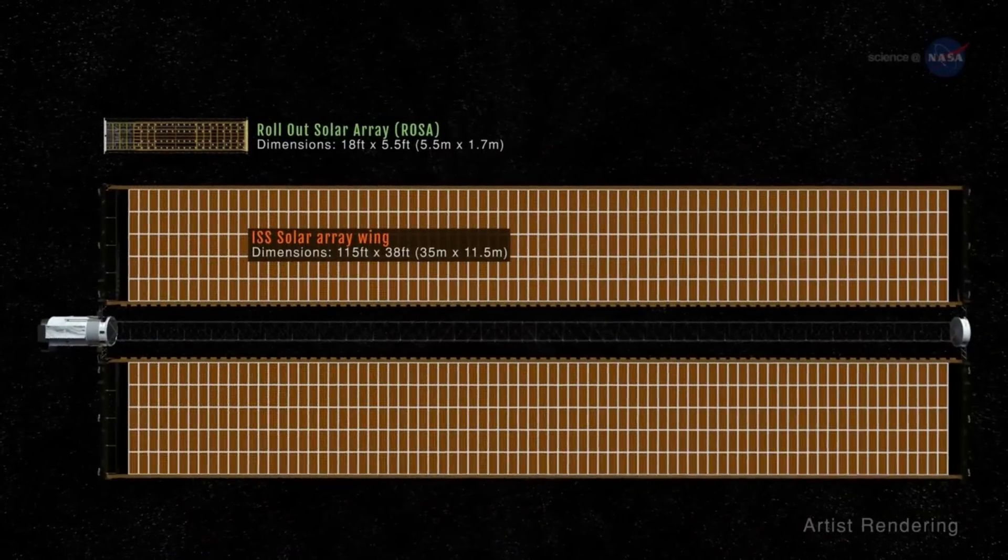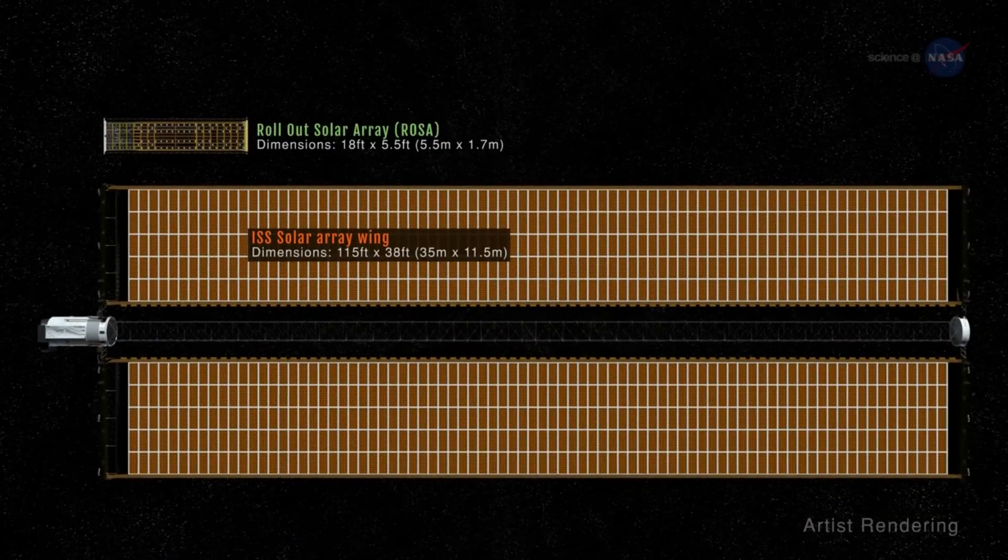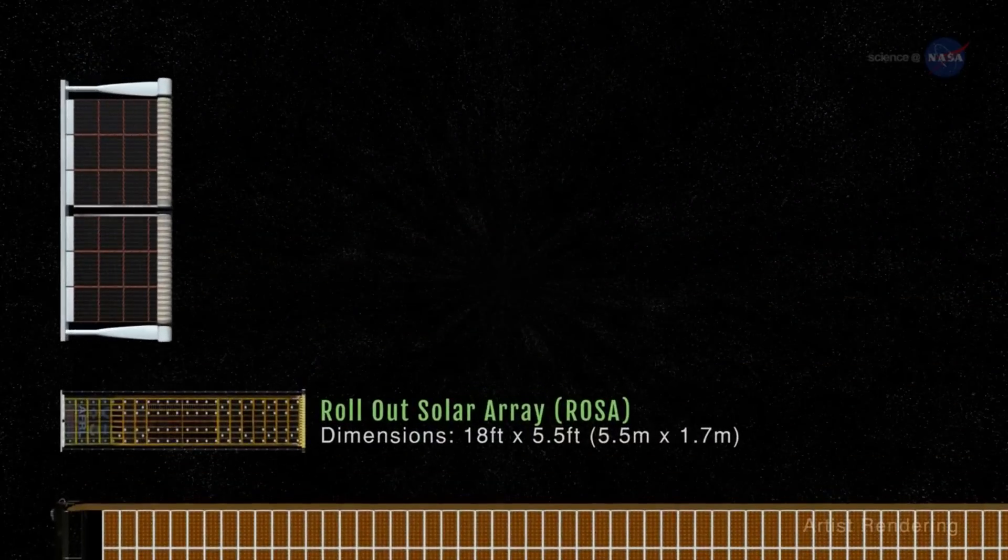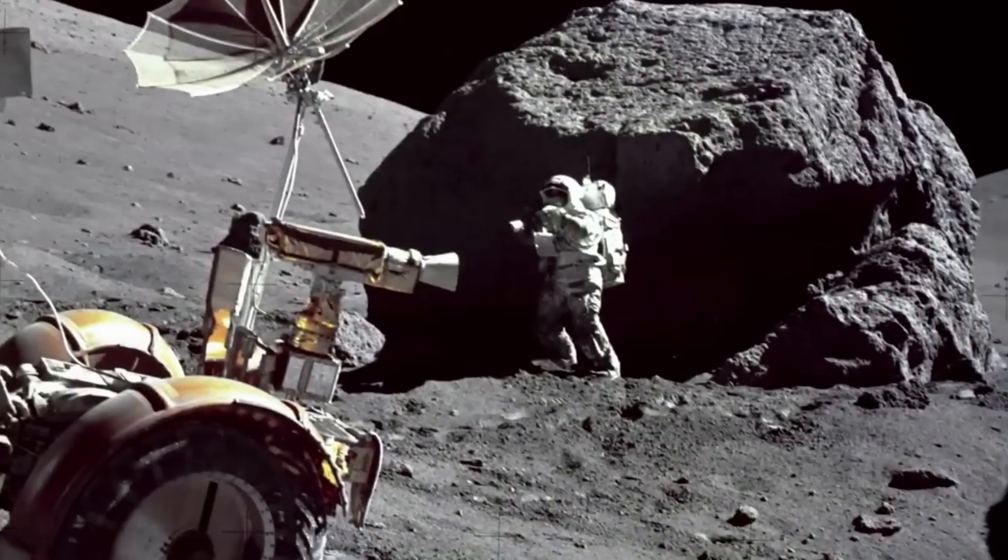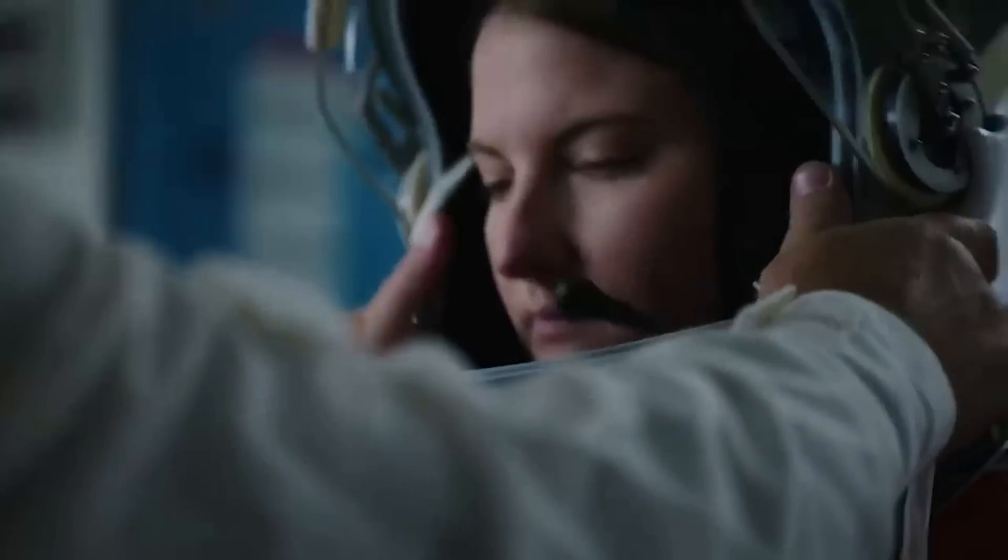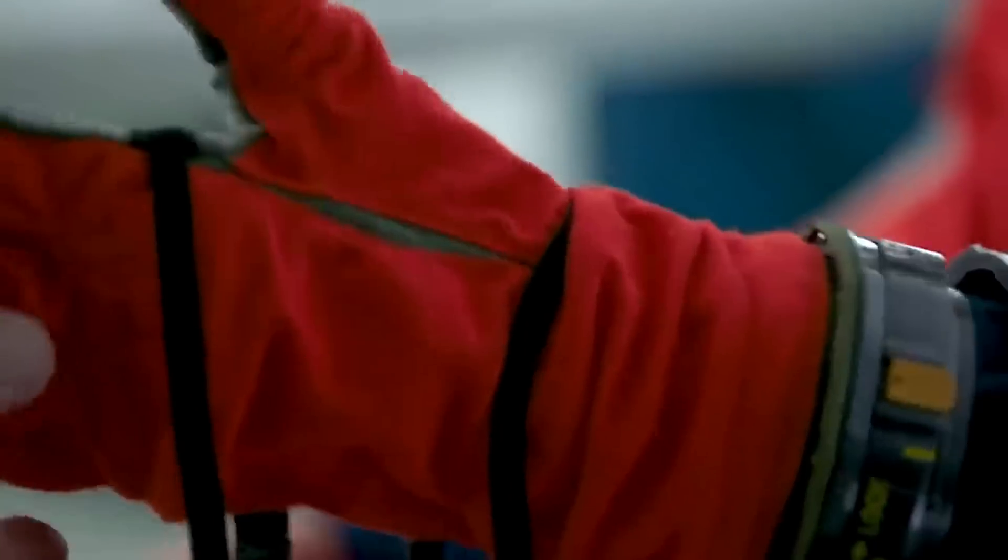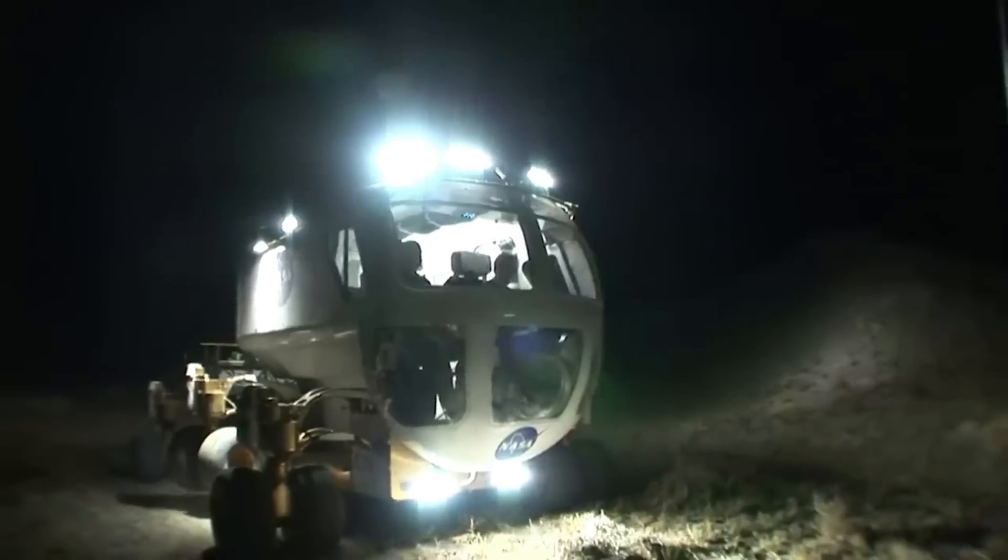While NASA is excited about what Blue Origin is working on, they aren't relying on it. Last year, NASA selected three companies to further advance work on deployable solar array systems that could help power the agency's human and robotic exploration of the moon under Artemis. Through Artemis missions, NASA will return humans to the moon and establish a long-term presence near the lunar south pole. A reliable, sustainable power source is required to support lunar habitats, rovers, and even construction systems for future robotic and crewed missions.